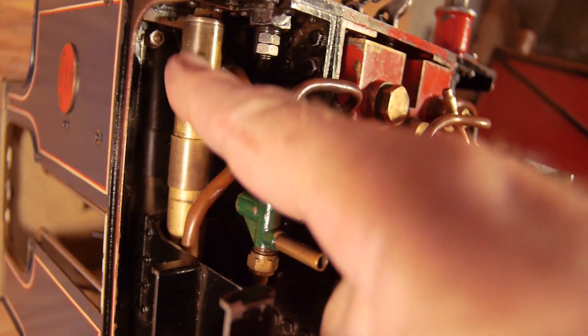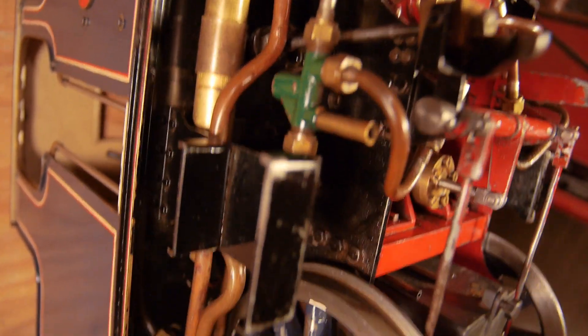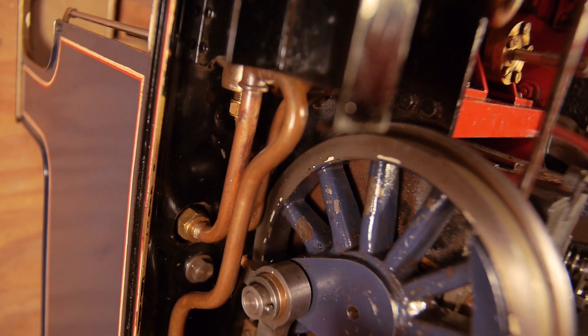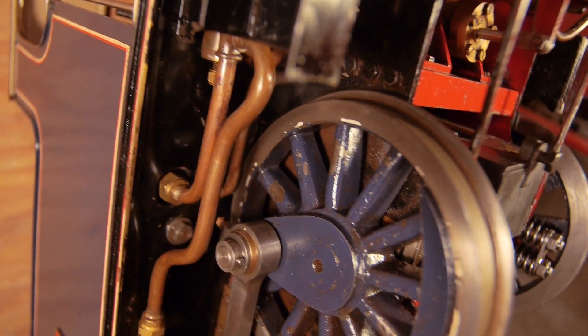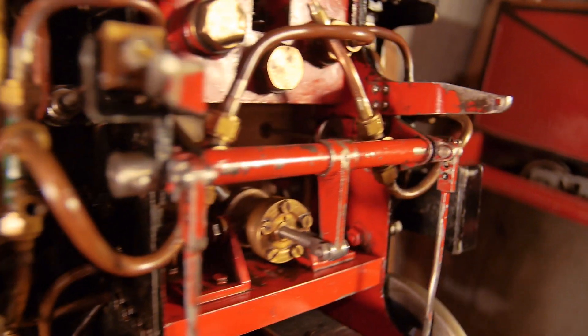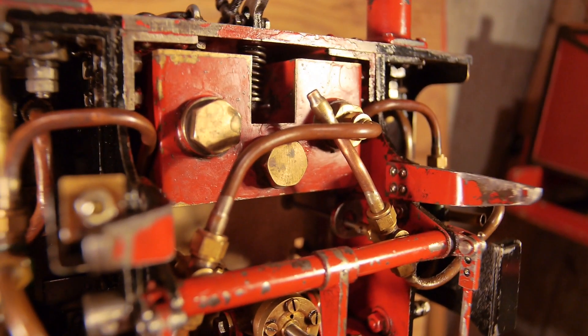See here the whistle, quite a large whistle with control from the cab. Various pipe work for the axle pump and the balance pipe for the rear water tank up here, which you've seen already.